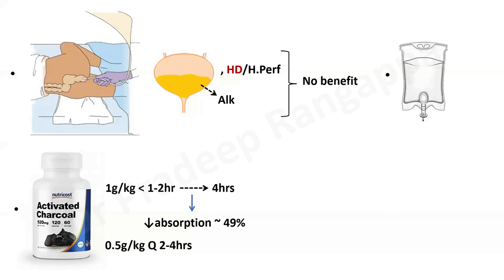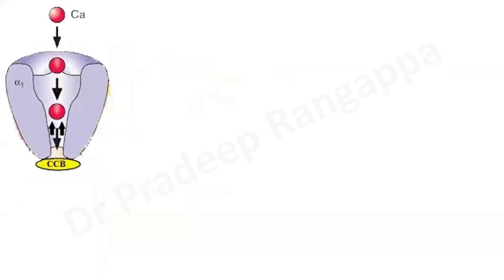Activated charcoal is recommended in patients with calcium channel blocker overdose. The dosage is 1 gram per kg to be given within one to two hours, and this has shown to reduce absorption by 49%. It can be repeated at 0.5 grams per kg every two to four hours based on severity. Whole bowel irrigation and activated charcoal should be considered as soon as the patient presents to the ER, preferably within one to two hours for maximal efficacy.